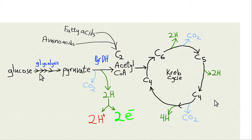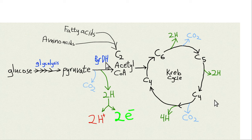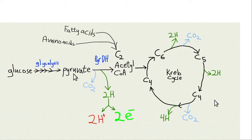Starting with glucose: it's taken into the cell, phosphorylated, and runs through glycolysis. The end product is pyruvate. Pyruvate enters the mitochondria, is decarboxylated — CO2 is taken off by the enzyme pyruvate dehydrogenase — and two hydrogens are stripped off. The atom is split: protons are pumped into the intramembranous space, and the electrons run down the electron transport chain. The decarboxylation converts the three-carbon pyruvate into two-carbon acetyl-CoA.